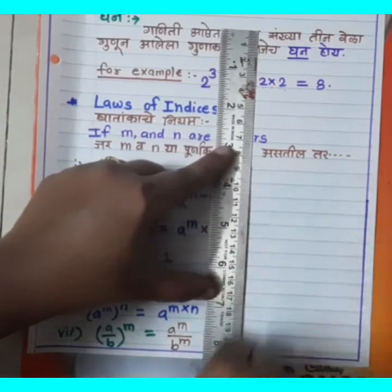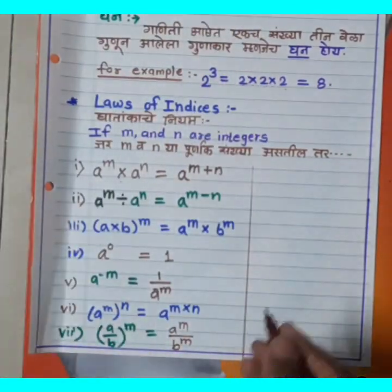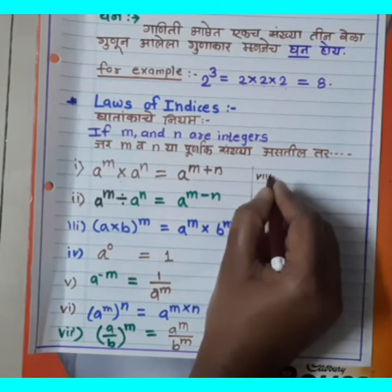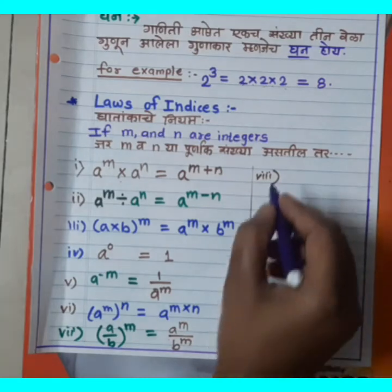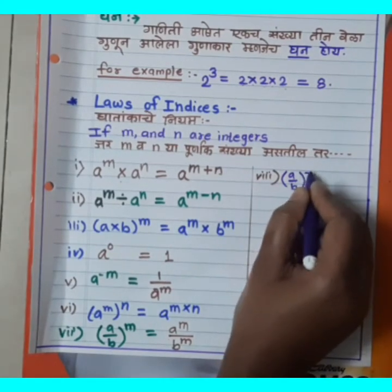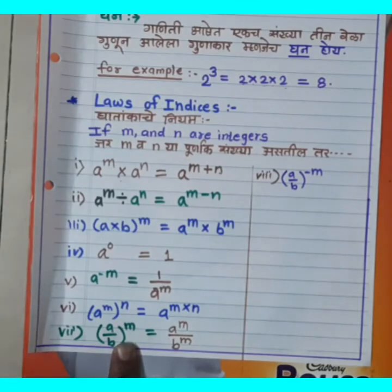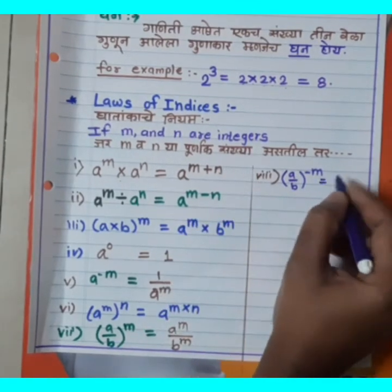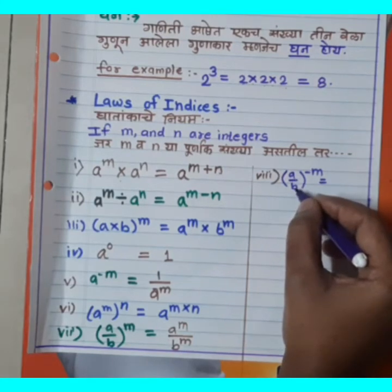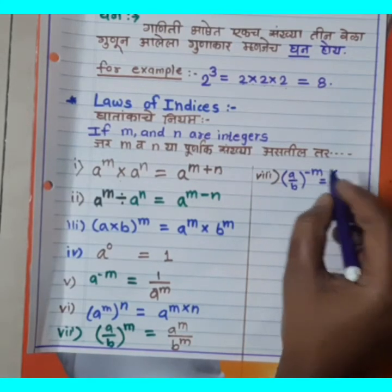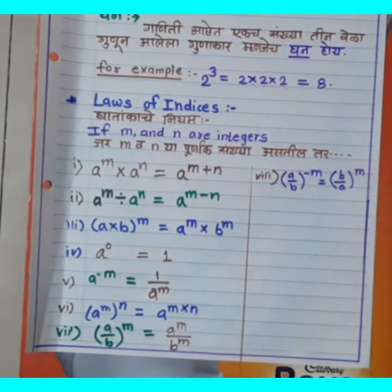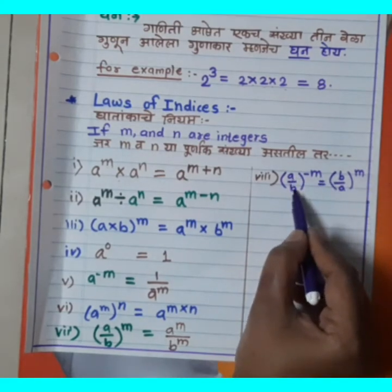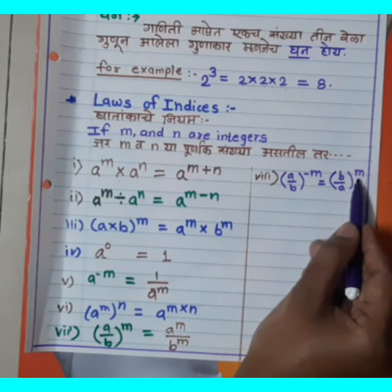Eighth Rule: (A upon B) raise to minus M. When you have a negative exponent on a fraction, you flip it. So (A/B)^(−M) = (B/A)^M. The negative exponent becomes positive and the fraction is inverted.